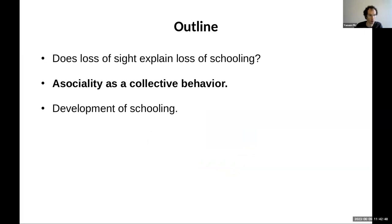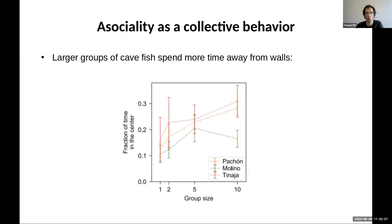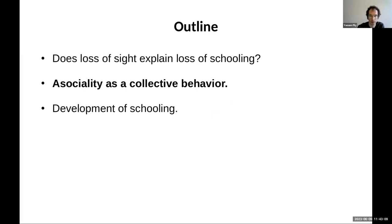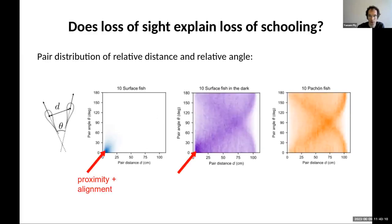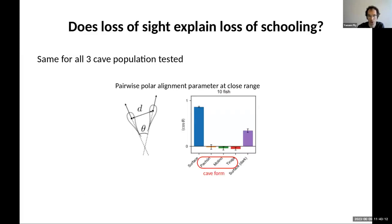That's the first story. The second is about asocial collective behavior. One thing we noticed with cave fish is that they spend a lot of time near the walls — that's what caused those arches in the earlier diagrams.